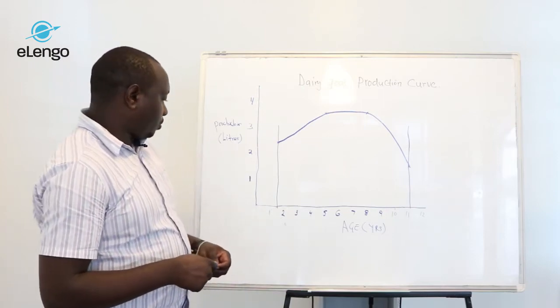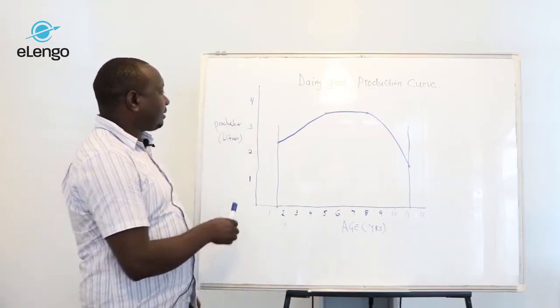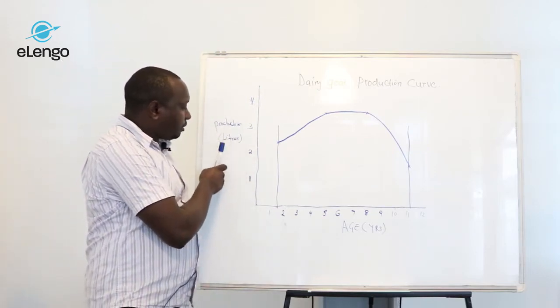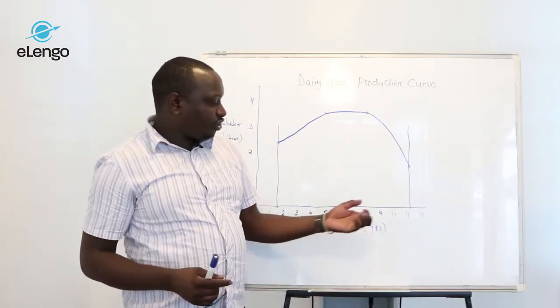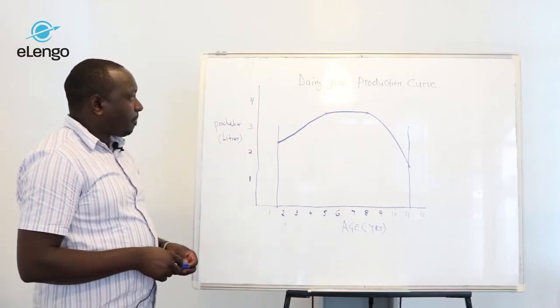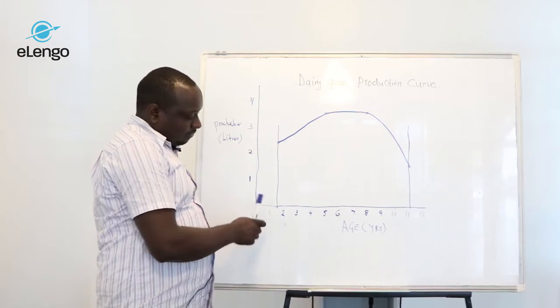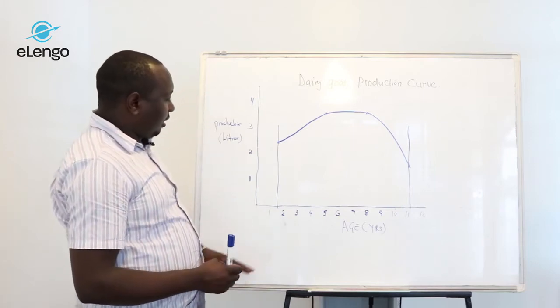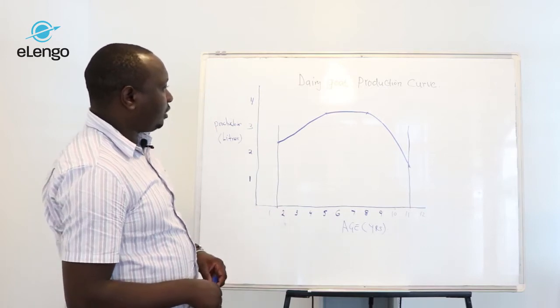As you can see, in our y-axis we have production in liters, and in our x-axis we have age in years. From the first one and a half years, our doe maturates.